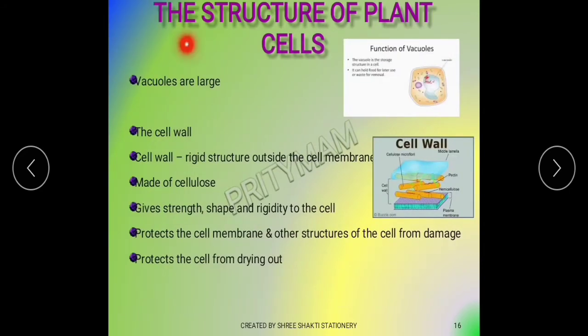So, the structure of plant cells — plant cells are different from animal cells in many ways. For example, vacuoles are large in plant cells, but there are many organelles which are common in both plant cells and animal cells. Let's understand the differences between them.